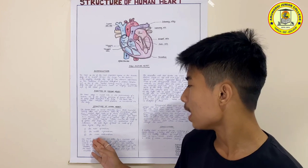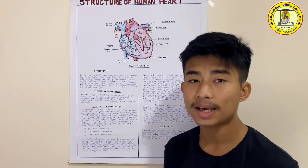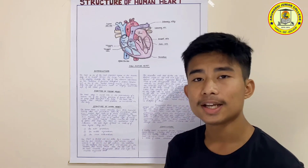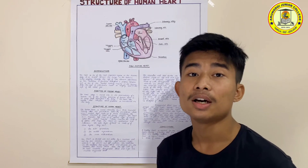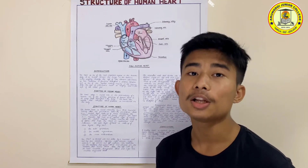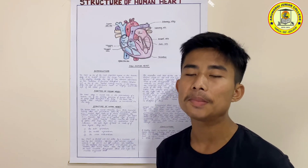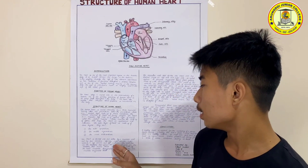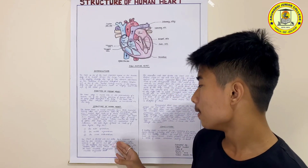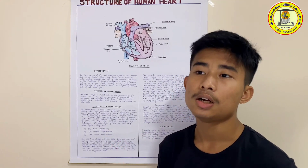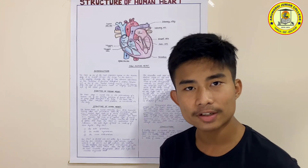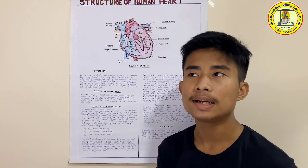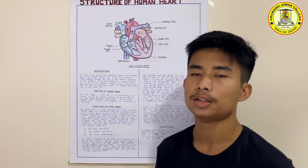The heart is divided into two sides by a muscular wall and has four chambers: the right atrium, the right ventricle, the left atrium, and the left ventricle. The ventricles pump blood throughout the body, and the atria receive blood.